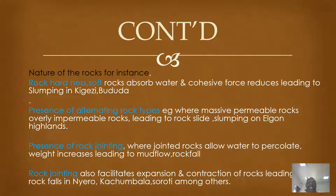The other one is rock jointing, whereby jointed rocks allow water to percolate through. As a result, the weight of materials increases, leading to mass wasting types like mudflows and rock falls. Also, rock jointing facilitates the expansion and contraction of rocks. As a result, rocks break and fall off. For example, in Moroto in eastern Uganda, in Katakwi, Soroti, among other areas.